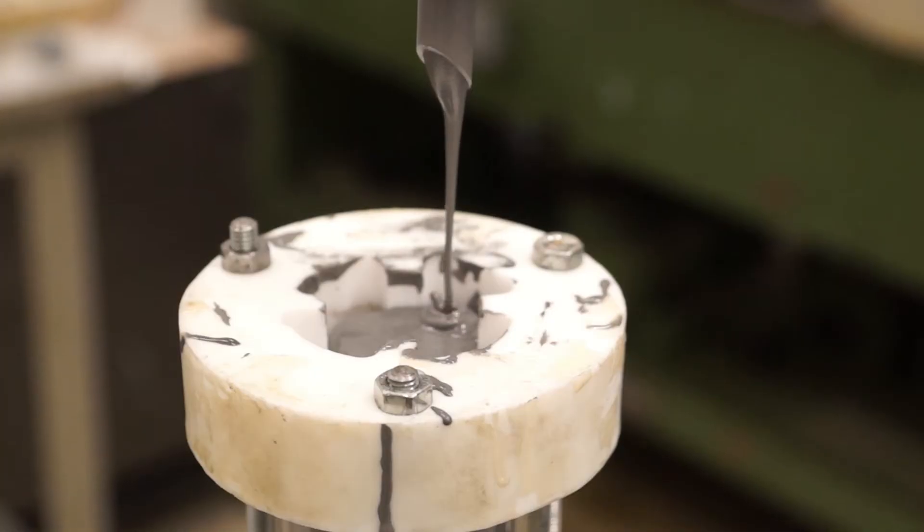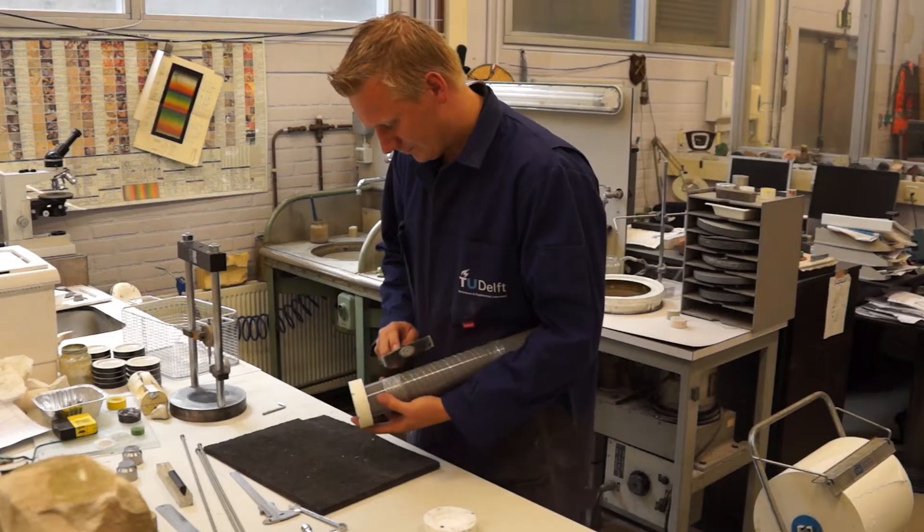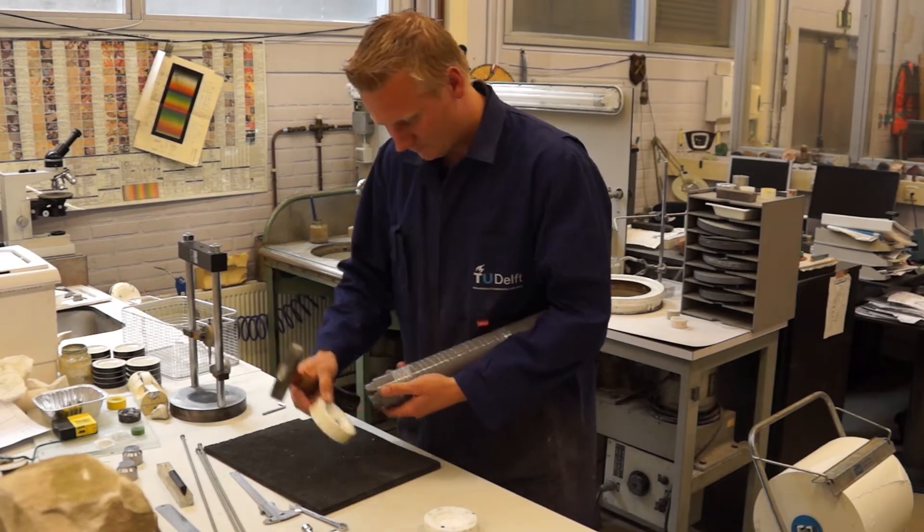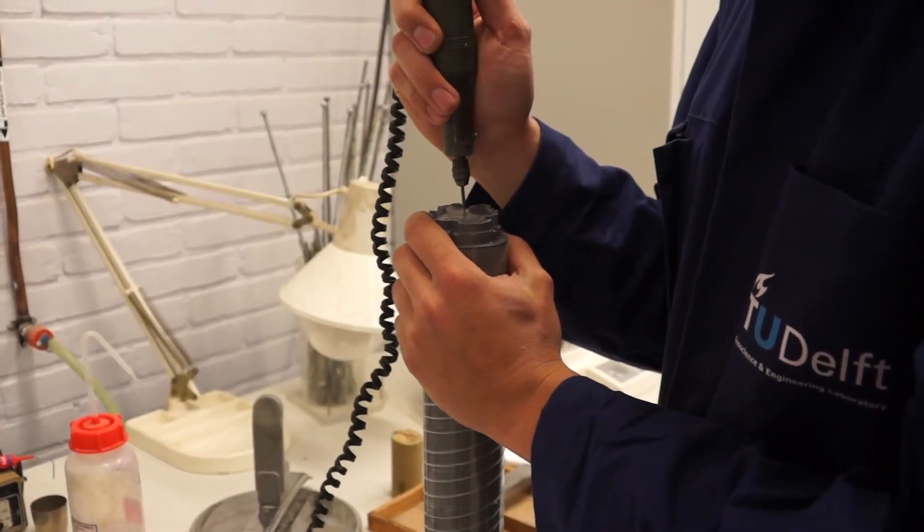We then seal the outer edges of these core samples to keep the fluids inside and to allow us to maintain them at the desired pressure and temperature.